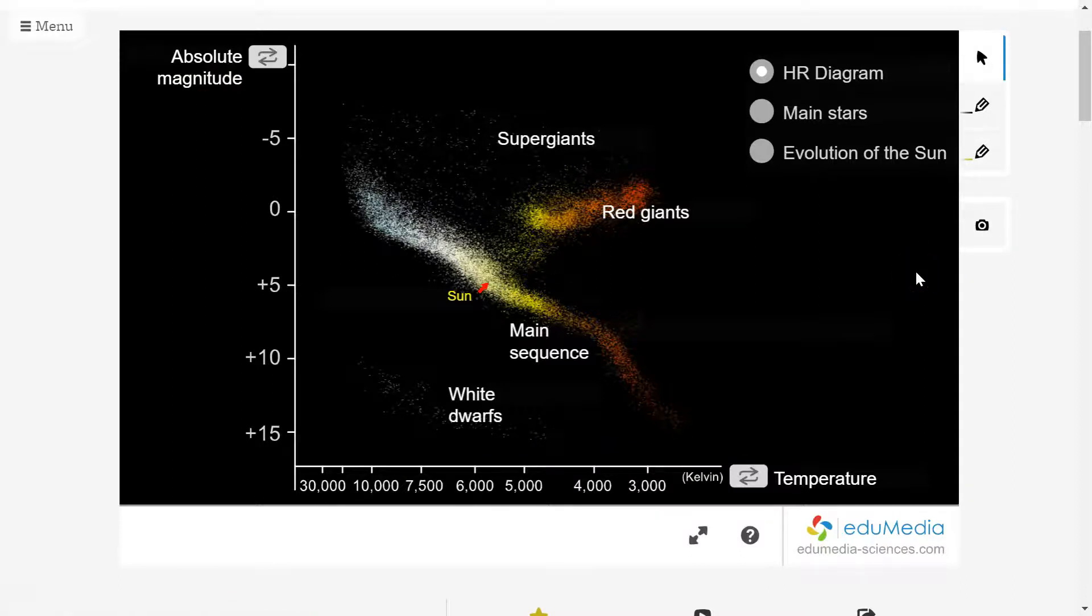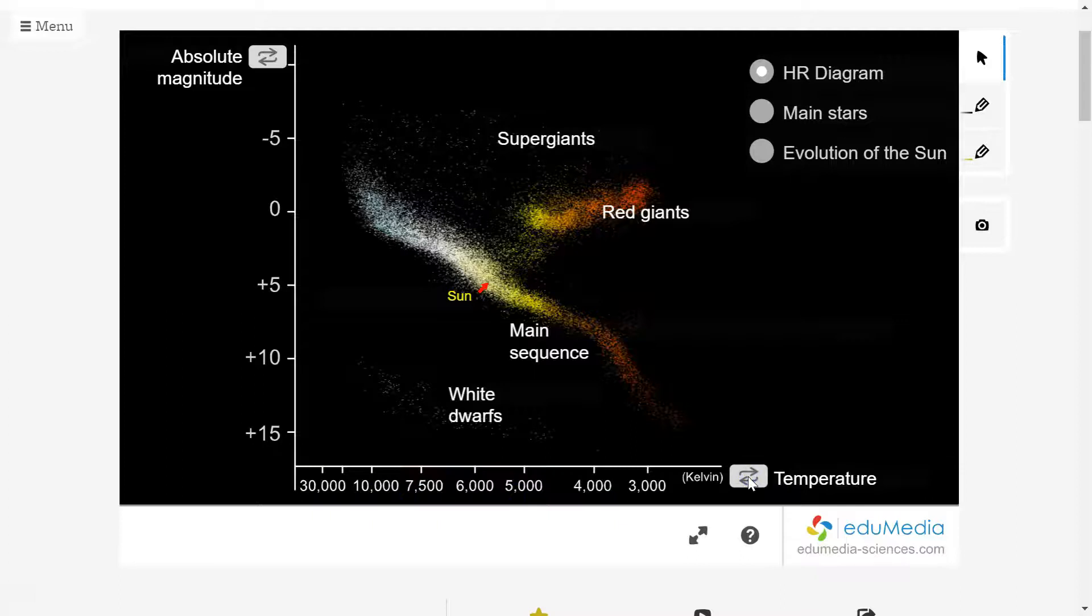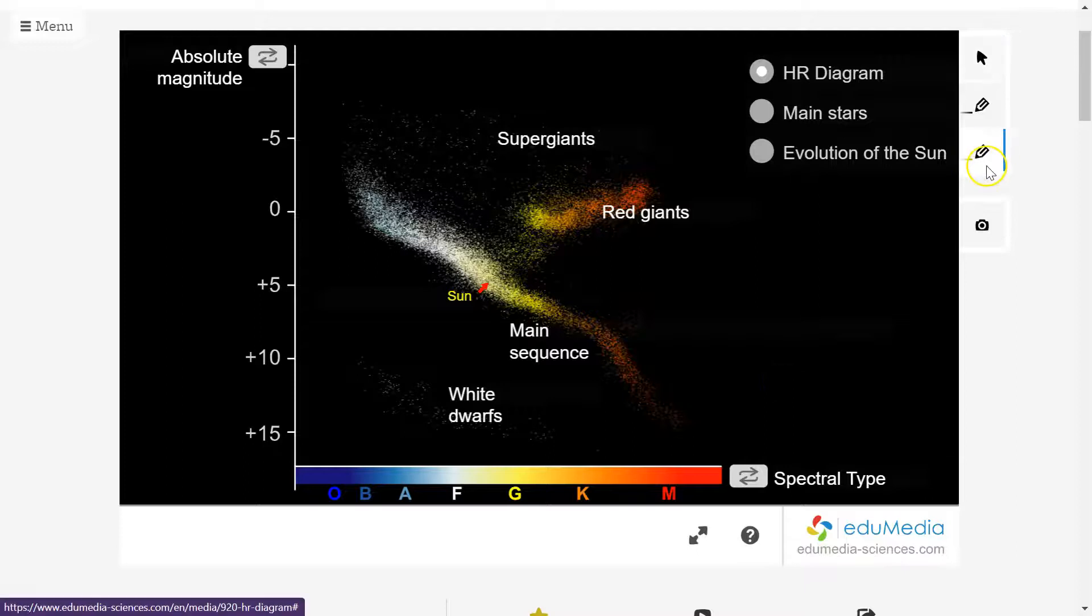It turns out that the temperature of a star can be linked to its color. So if you click this two arrows here, you'll see something, you'll see the x-axis change to something called spectral type. And spectral type says that, or there are letters for each spectral type: O, B, A, F, G, K, M.